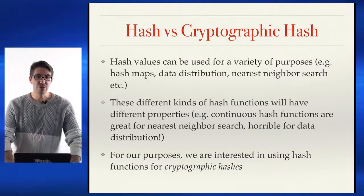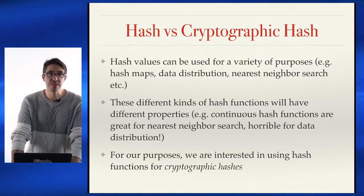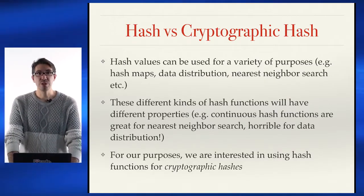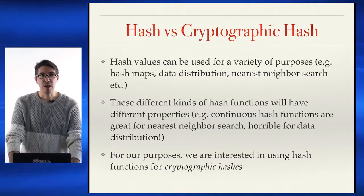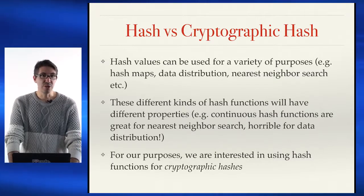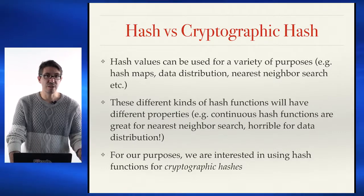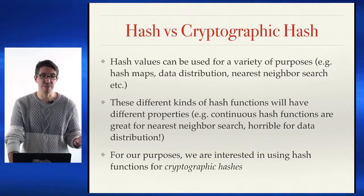Hash values are used for a lot of different things in computer science. You've probably heard of the data structure a hash map, which determines where to place some data in memory based on the hash of that data, or nearest neighbor search, distributing data in a ring or on a cluster. There are a lot of different hash functions out there, all of which have different properties and things that they're useful for or not useful for.